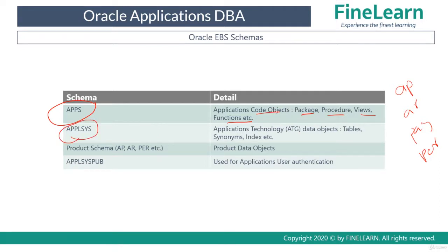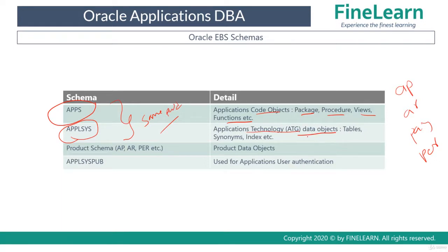Now there is something called ApplSys Schema. ApplSys and Apps Schema are very closely related and they always have the same password. However, none of the users or even DBAs generally connect to ApplSys Schema — for administration you will only use Apps Schema. The ApplSys Schema contains the data objects related to ATG, which stands for Applications Technology Layer. ATG products are used for administration and reporting, not for business functions like payables or HR.